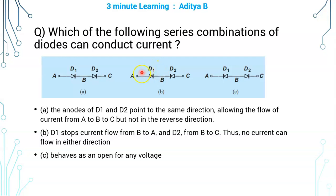So either D1 stops current flow from B to A, or D2 stops current flow from B to C. In any case, only one diode will conduct — whether the potential at A is greater than C or the potential at C is greater than A. Both diodes cannot conduct at the same time because of their orientation. So this series branch will never conduct.